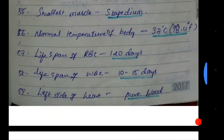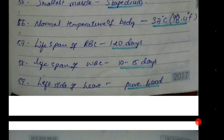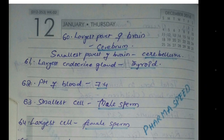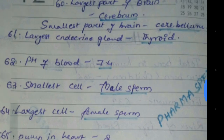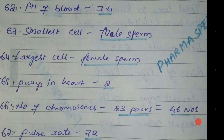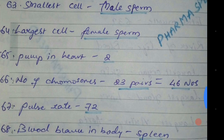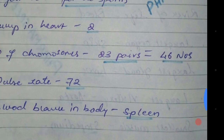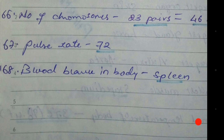RBC life span — 120 days. The smallest part of the brain is the cerebellum, and the largest endocrine gland in our body is the thyroid. pH of blood is neutral — 7.4. Smallest cell is male sperm. Largest cell is female egg. Pumps in the heart — 2: systolic and diastolic. Number of chromosomes — 23 pairs, which is 46. Pulse rate is 72 beats per minute.